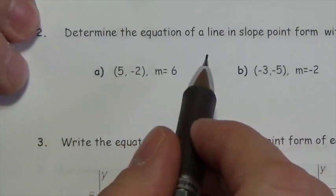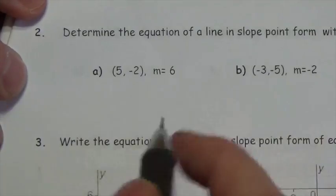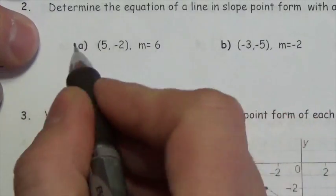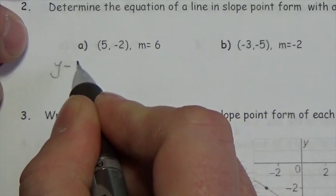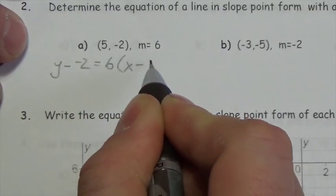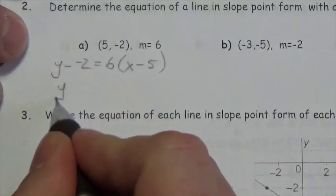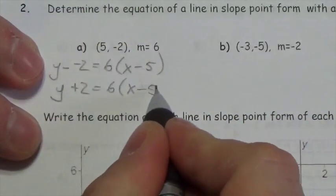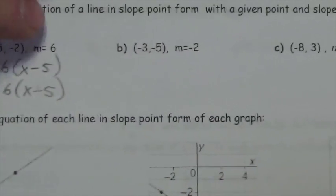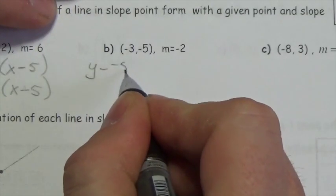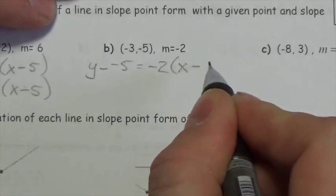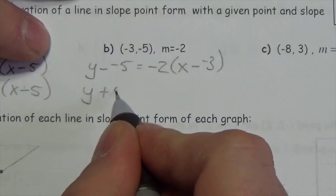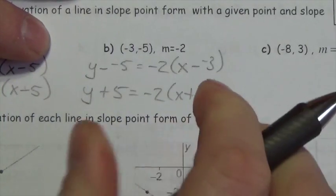Now we're asked to determine the equation of a line in point-slope form given information. This is really easy — it's why this is one of my favorite versions. For a point and slope given, the form is: y minus the y-coordinate equals the slope times x minus the x-coordinate. For example, simplifying the negatives: y minus negative 2 becomes y plus 2, equals 6 times (x minus 5). For the next one: y minus the y-coordinate equals negative 2 times (x minus negative 3), giving y plus 5 equals negative 2 times (x plus 3).